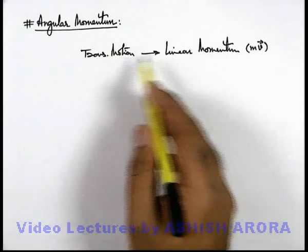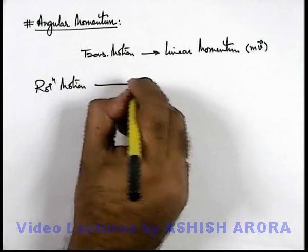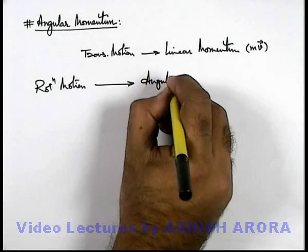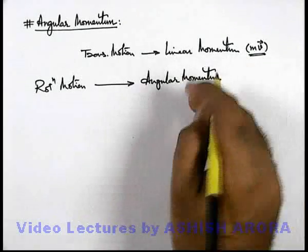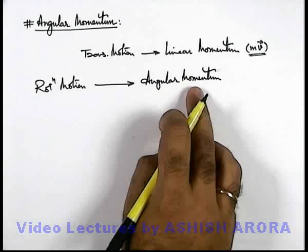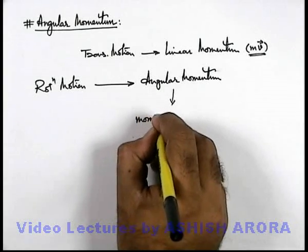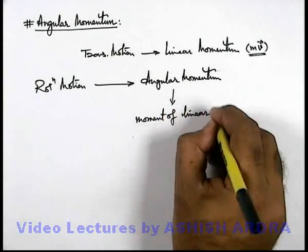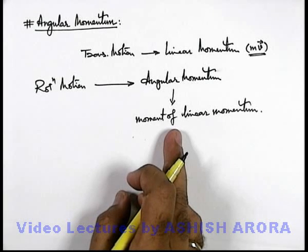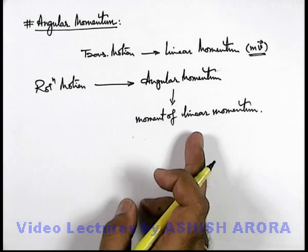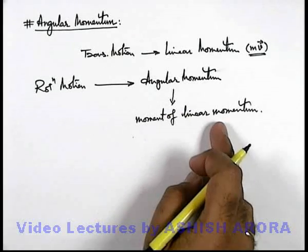Similar to the physical quantity linear momentum in translational motion, in rotational motion we define a similar quantity that we term as angular momentum. As the name implies, linear momentum is mv; angular momentum is defined as the moment of linear momentum. Just like torque can be given as the moment of force, similarly in rotational motion the property angular momentum is defined as the moment of linear momentum.